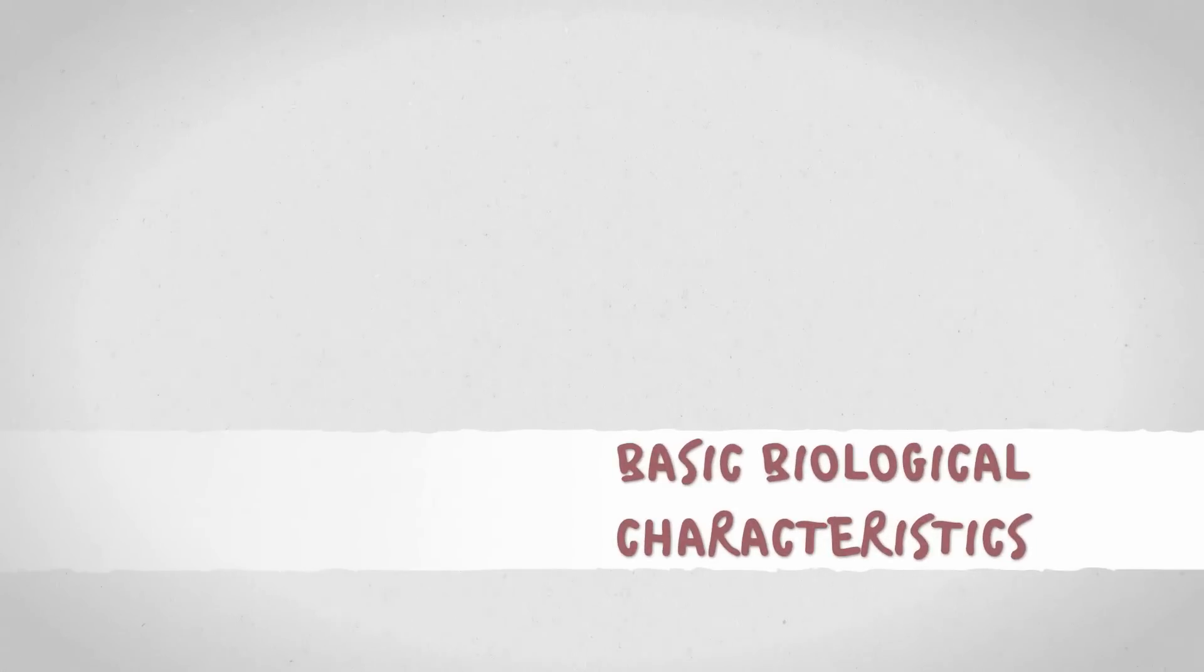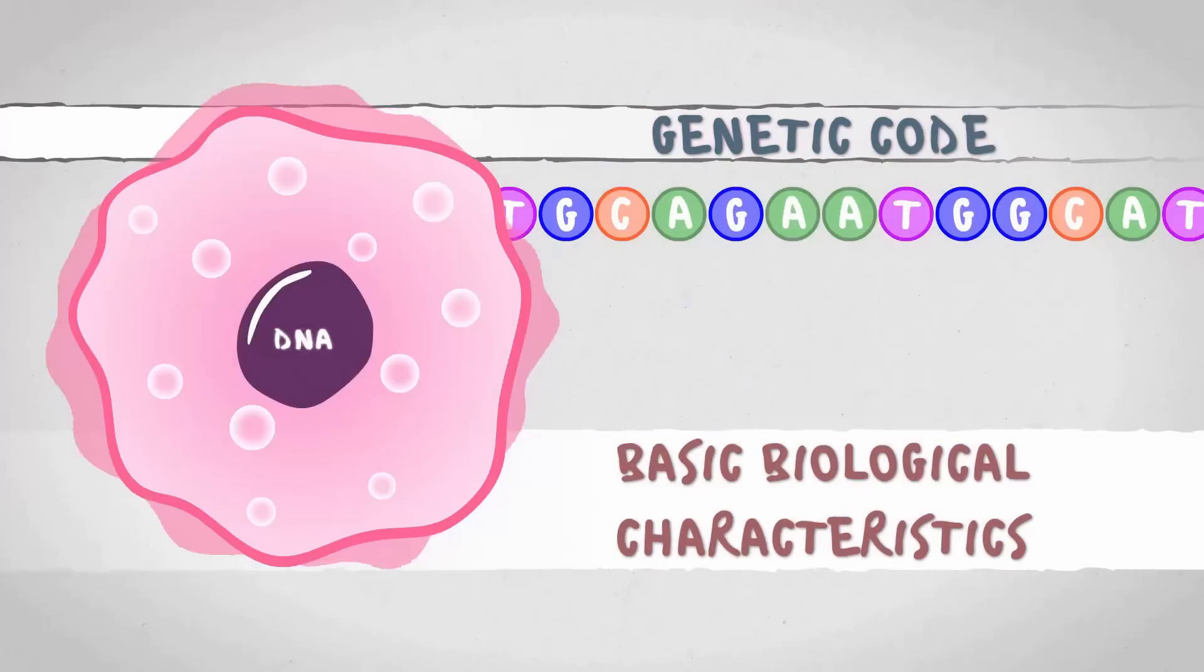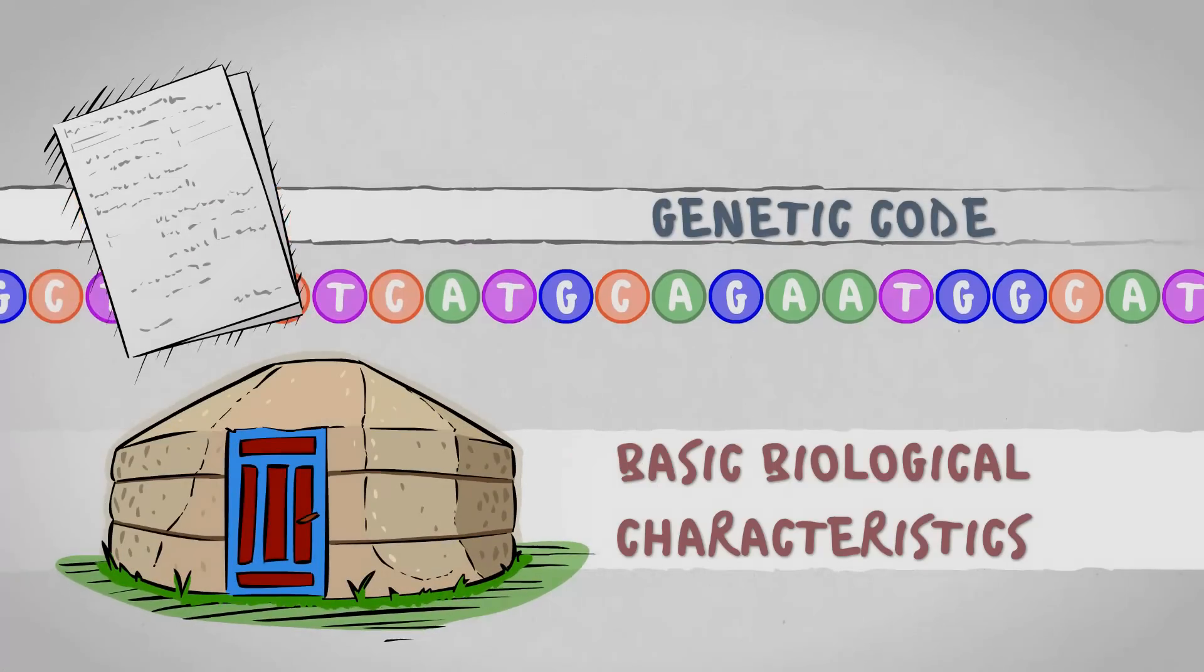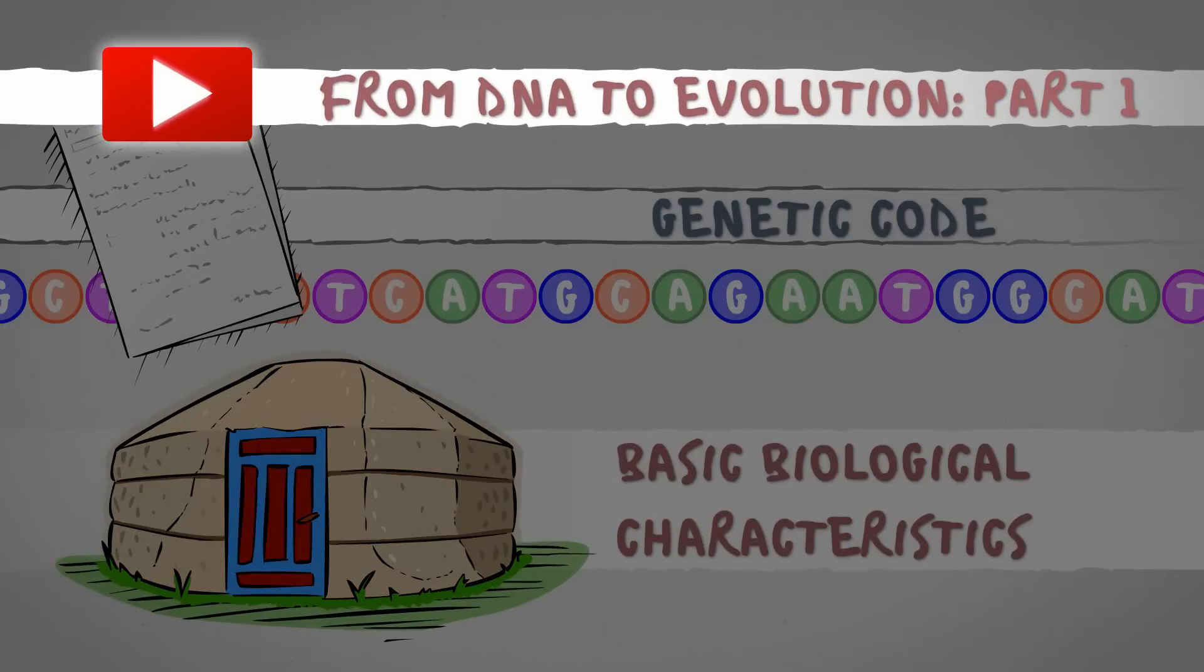The basic biological characteristics of living beings are determined by the genetic code made of DNA inside their cells. If this makes less sense to you than a Mongolian yurt sales contract, please watch this video before continuing with the current one.